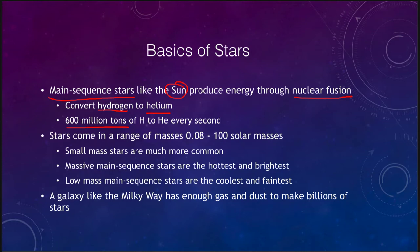Stars overall come in a big range of masses, from about eight one-hundredths the mass of the sun — a little under a tenth — for the lowest mass star possible, up to about 100 solar masses for the most massive stars.